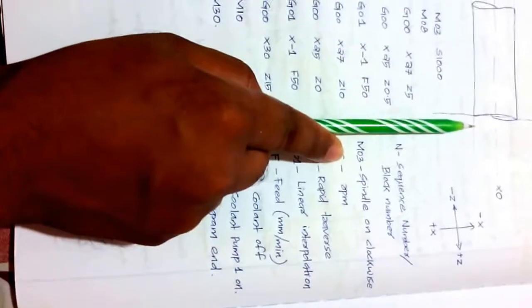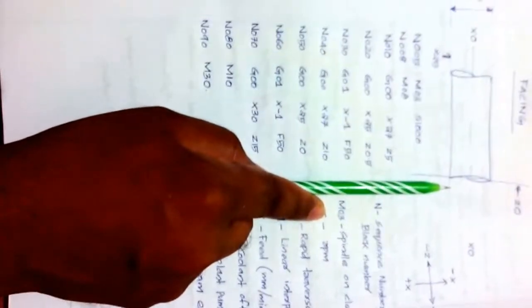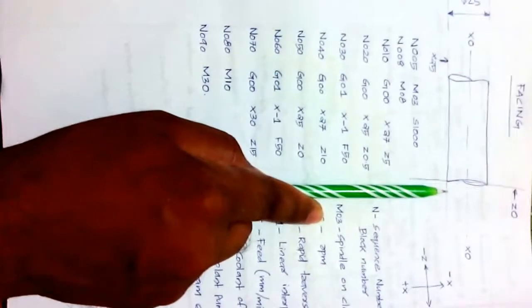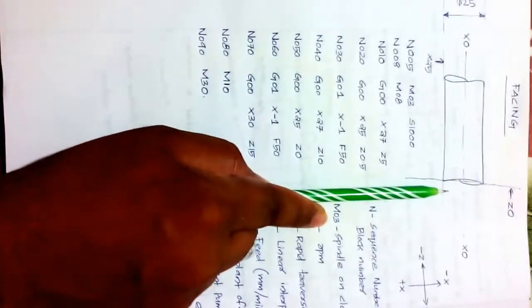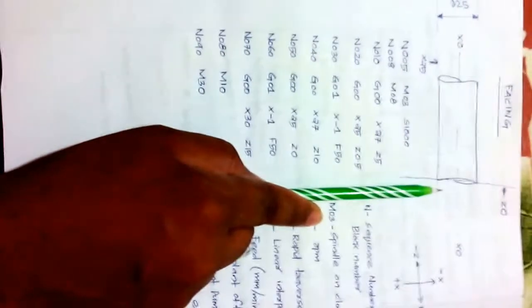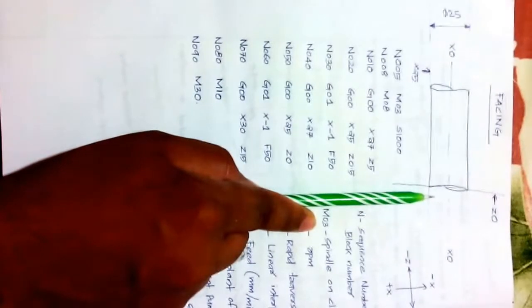N030: G01 X-1 F50. G01 means linear interpolation — the tool moves linearly toward X-1. X0 is the centerline, and X-1 is just beyond it. However, no facing cut is done here because the tool has not touched the workpiece; it is still separated by a distance of 0.5mm. The next block, N040, is G00 X27 Z10.